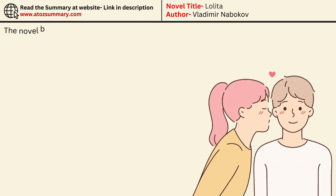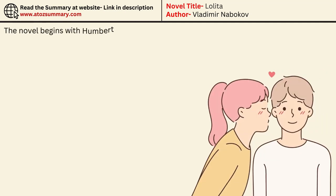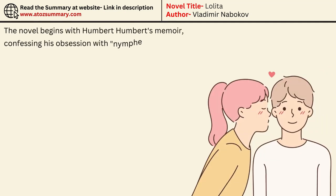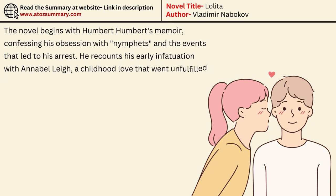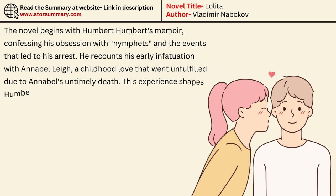The novel begins with Humbert Humbert's memoir, confessing his obsession with nymphets and the events that led to his arrest. He recounts his early infatuation with Annabelle Lee, a childhood love that went unfulfilled due to Annabelle's untimely death. This experience shapes Humbert's lifelong attraction to young girls.